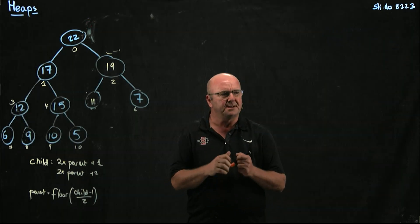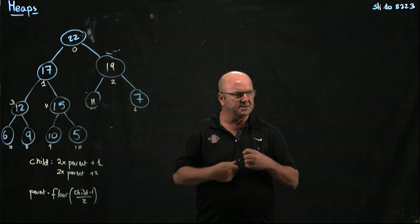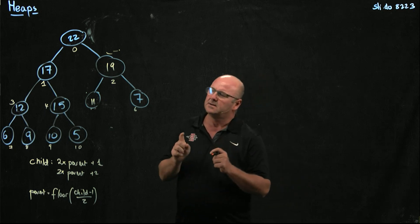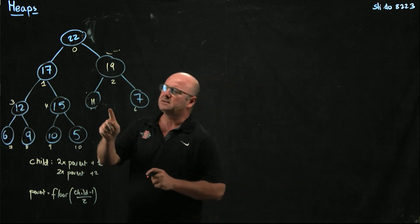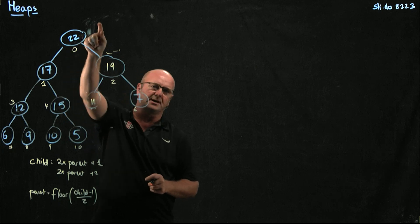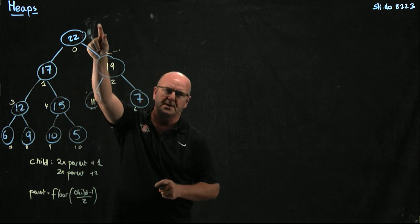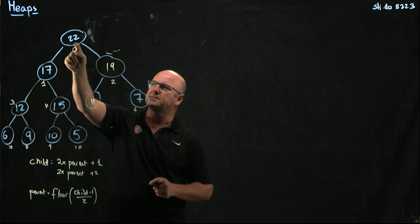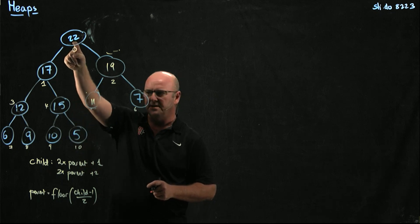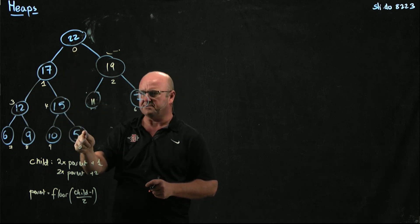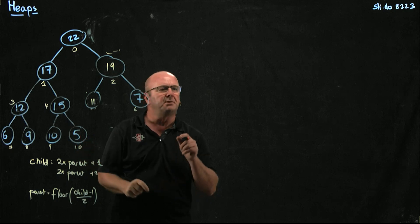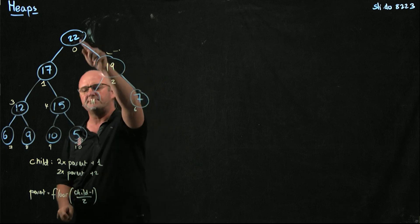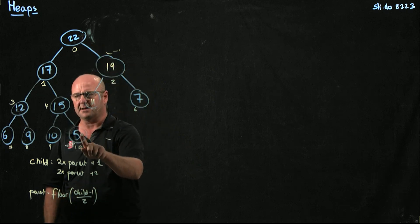In the remove method for our heap sort code, we took away the root element and we swapped in the last element into the root position, and then we did trickle down. But what we actually did was we swapped the root element and the last element.